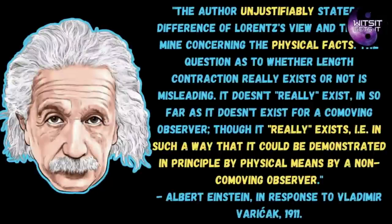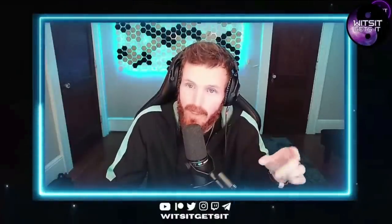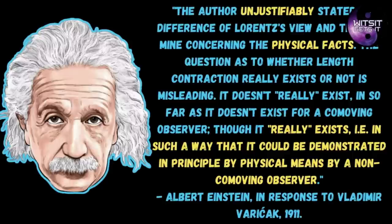Einstein himself corrected this: 'The question as to whether length contraction really exists or not is misleading. It doesn't really exist insofar as it doesn't exist for a co-moving observer — the observer is also contracting, as is all the space around the observer; everything's contracting together. So it really exists in such a way that it could be demonstrated in principle by physical means by a non-co-moving observer.' Meaning: if you were outside the reference frame that's moving, you'd be able to physically measure it. It's not just subjective and apparent — it's a real physical thing.